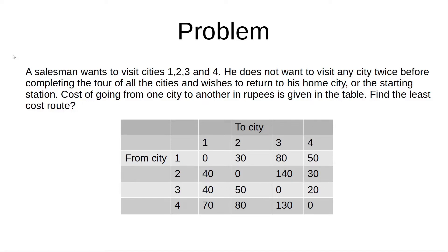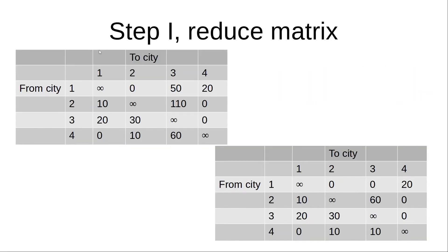The first thing you have to do is replace the zeros in the diagonal elements with infinity. The second step is to start with the topmost row and find the least cost entry. In row number 1 this is 30; reduce it from the other elements, so 50 minus 30 = 20 and 80 minus 30 = 50. Similarly in row number 2, the least cost entry is 30, so 40 minus 30 = 10 and 140 minus 30 = 110. We do the same for all other rows, and this is the table we get.